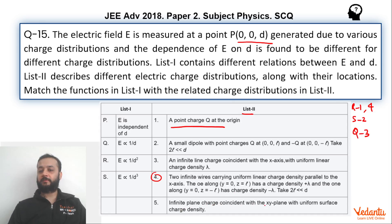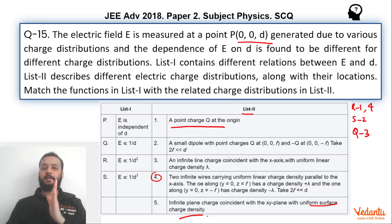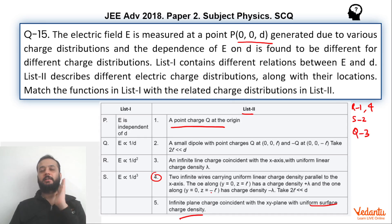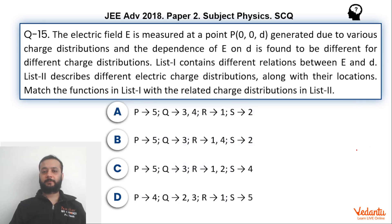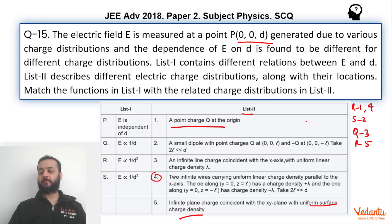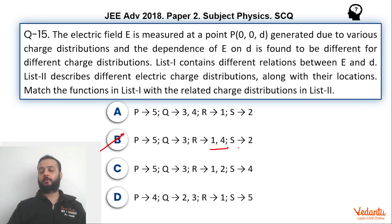Configuration 5 is fairly simple: infinite charge coincident with the XY plane. You can assume the XY plane is infinitely charged with uniform surface charge density. The electric field will be independent of distance because for an infinite charge sheet, electric field is sigma upon 2 epsilon naught, and hence does not depend upon the location of the point. So P will match with 5. To summarize: P goes with 5, Q goes with 3, R goes with 1 and 4, and S goes with 2.